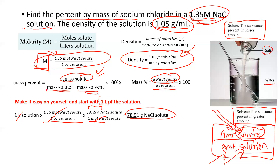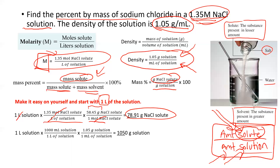Now I need to figure out grams of solution, not just grams of solute. I'm assuming I have one liter of solution. Density is in terms of milliliters, so I convert: one liter gives me 1000 mL of solution. Then I apply the density — 1.05 grams of solution per mL — to cancel the mL and convert to grams of solution, giving me 1050 grams of solution, which is my denominator for the mass percent.